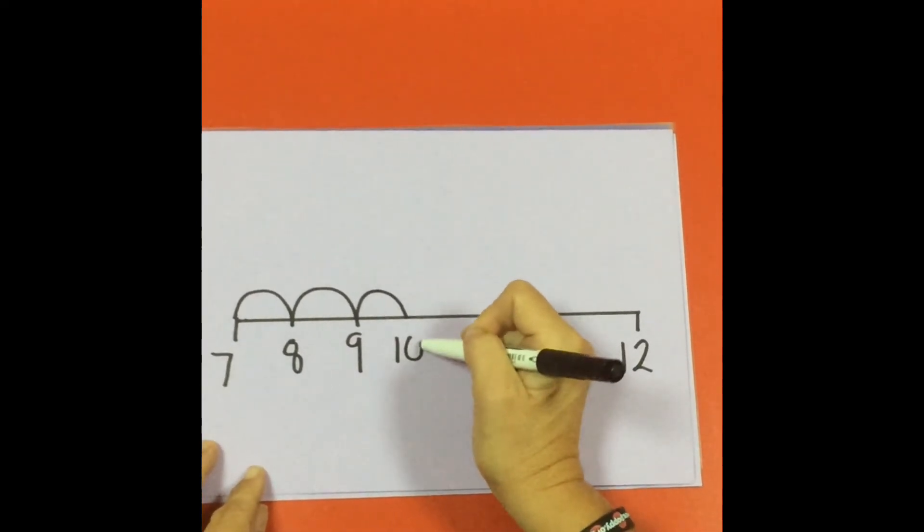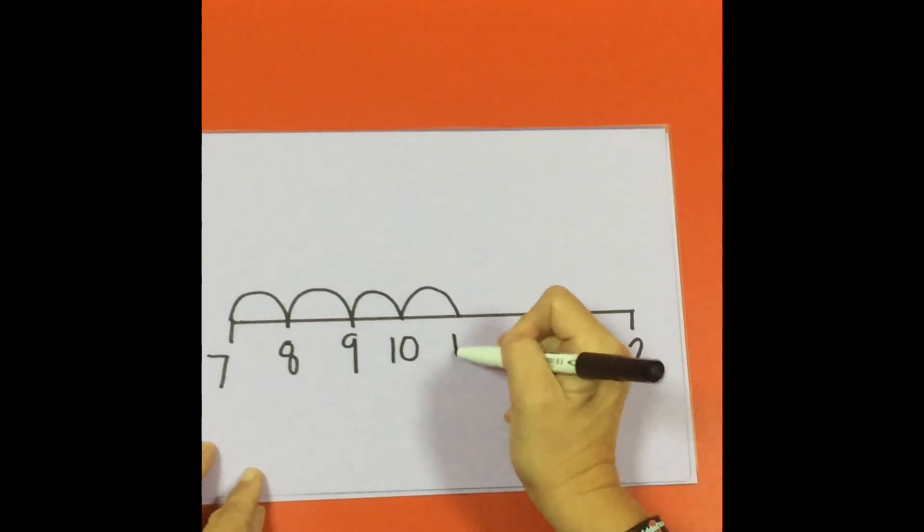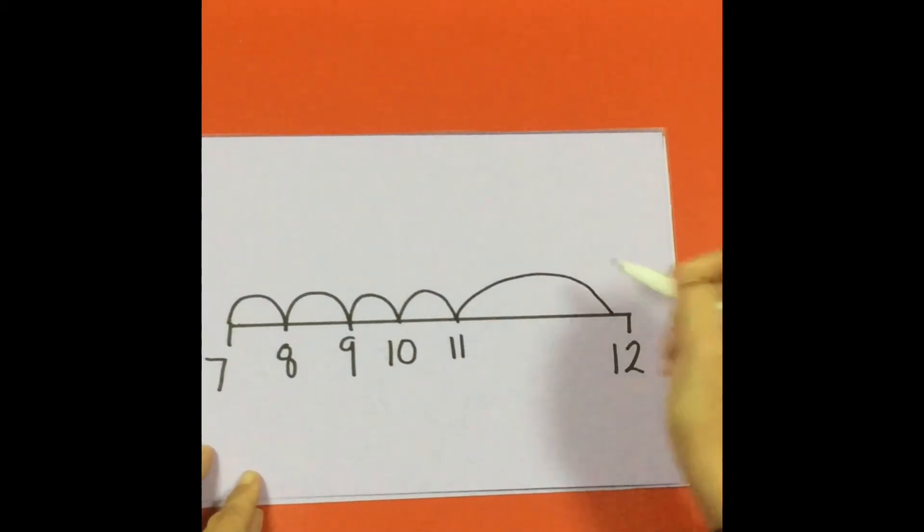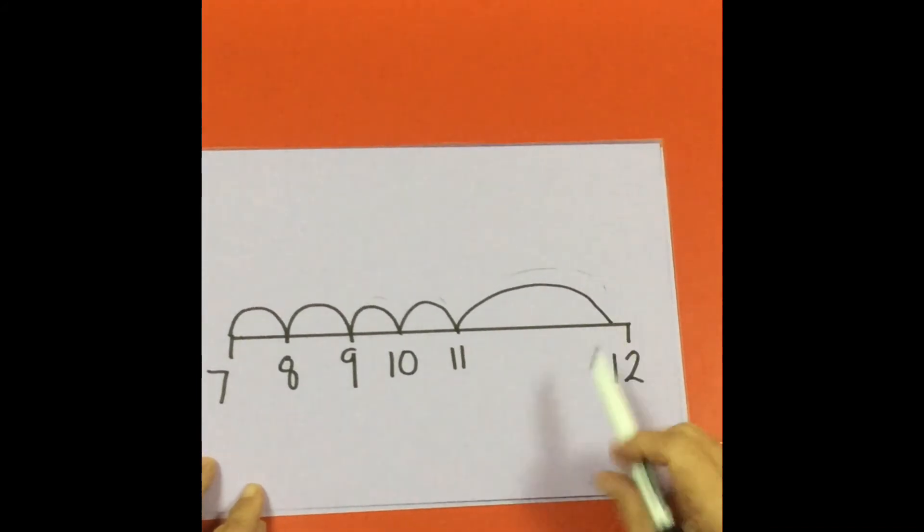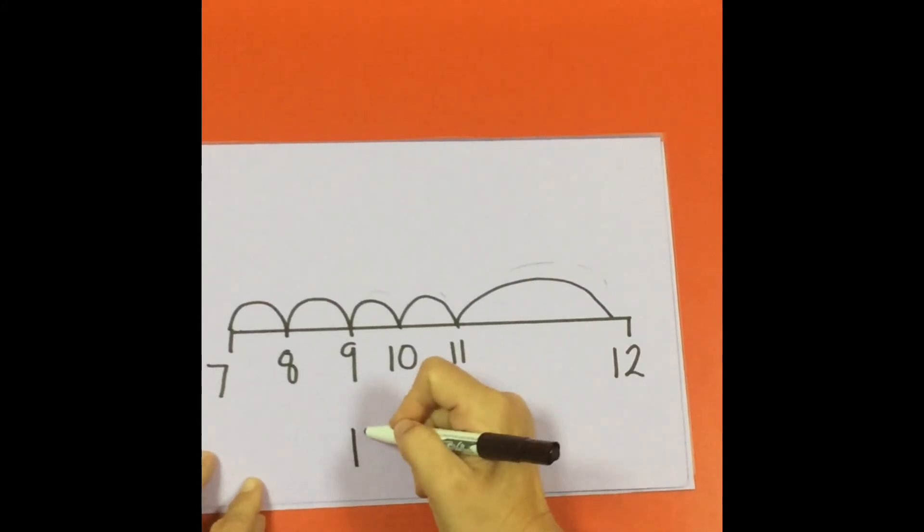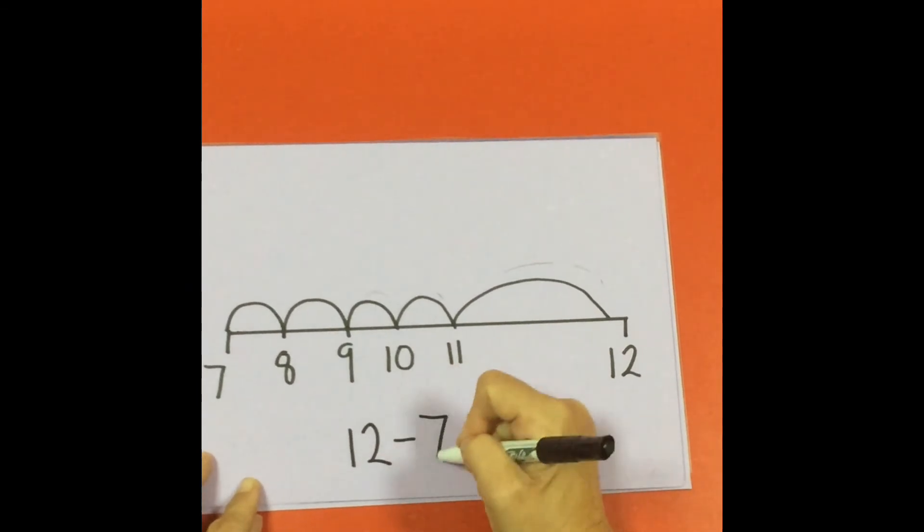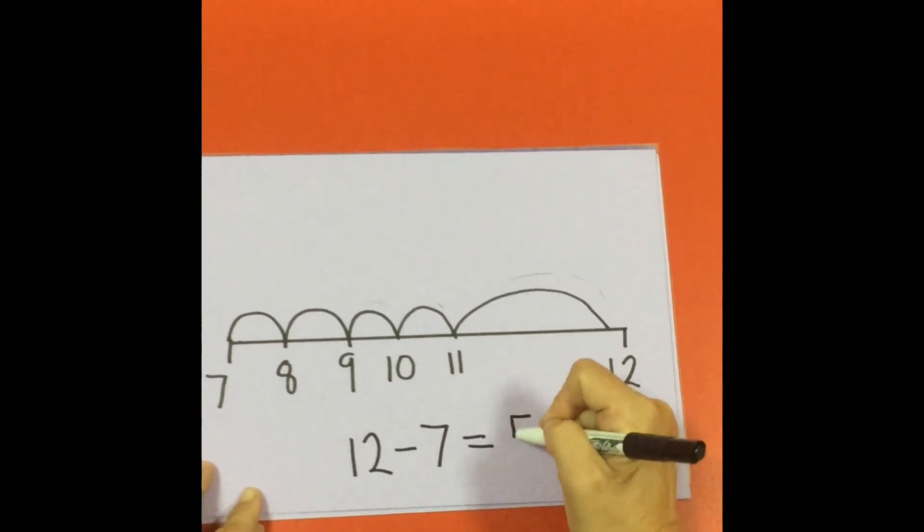Every time they land, they have to write a number. So the gap is 1, 2, 3, 4, 5. So the difference between 12 and 7 is 5.